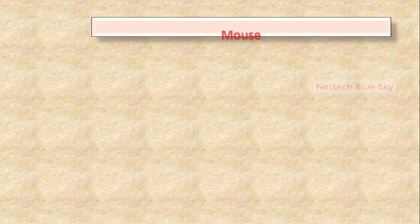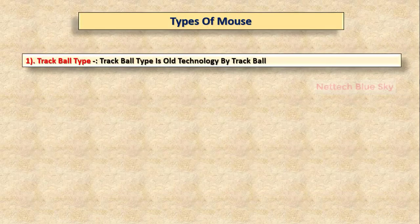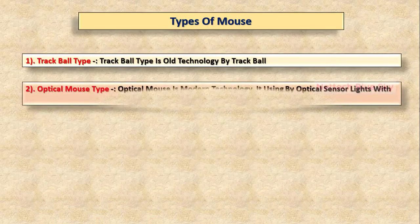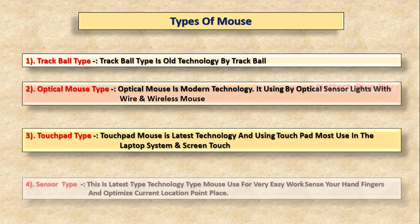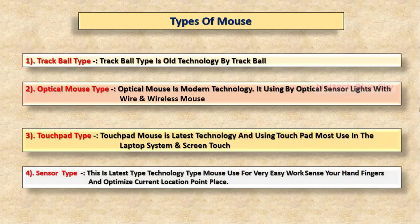So mouse device. What is a mouse and basic parts of mouse? Types of mouse: trackball type mouse, optical mouse, touchpad type mouse, sensor type mouse.